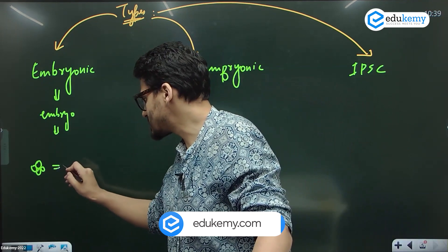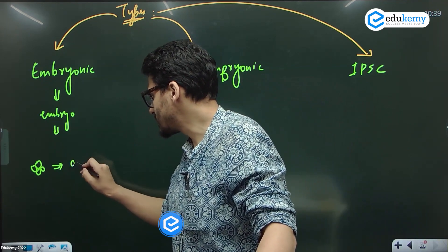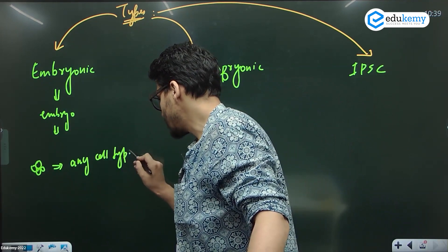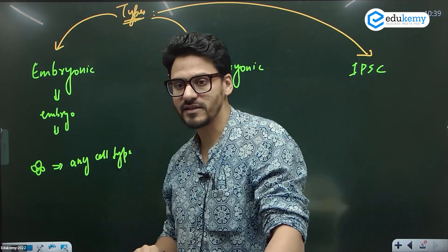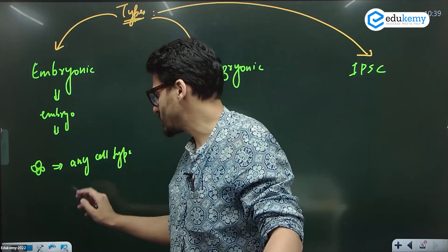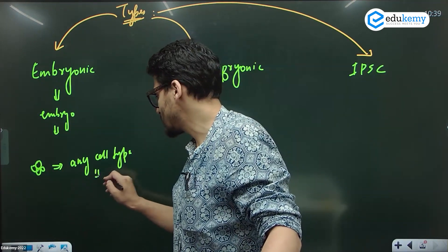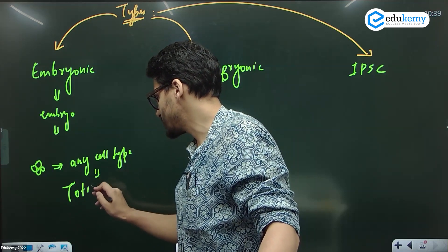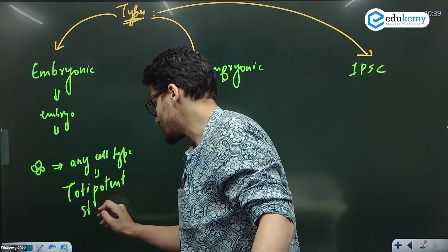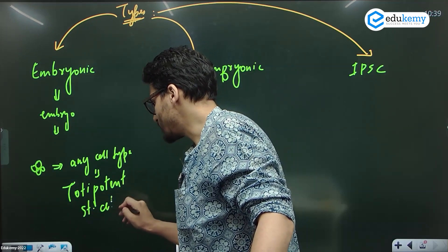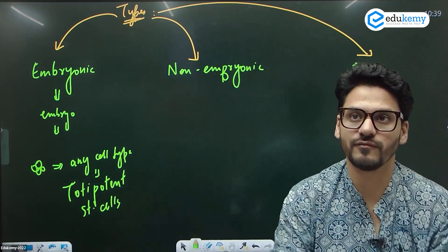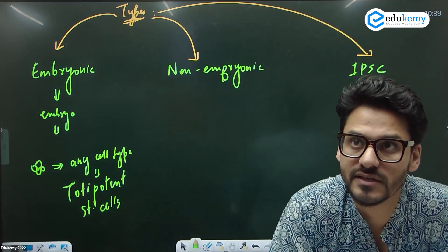So can we say that these cells can create any of the cell types? Yes, they can create any cell type. A cell that can create any cell type is known as totipotent. So embryonic stem cells are totipotent stem cells, because they can form any cell type.